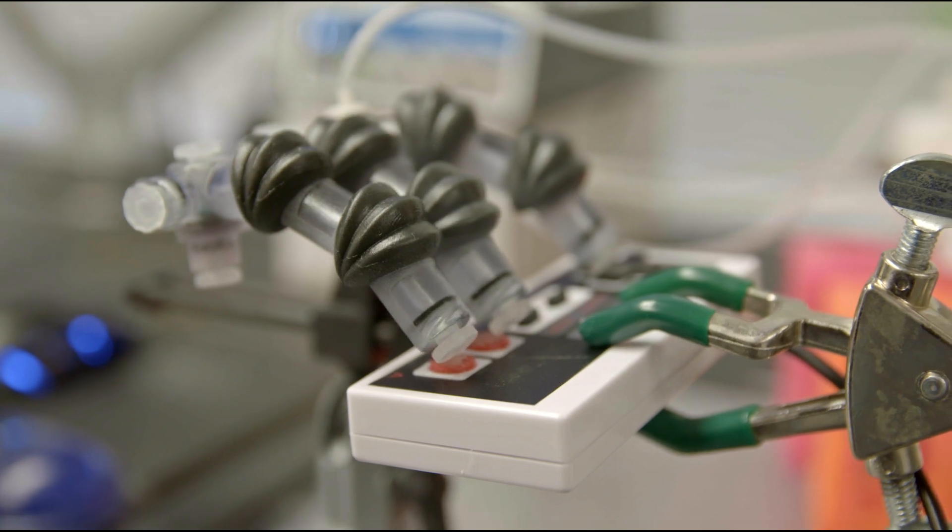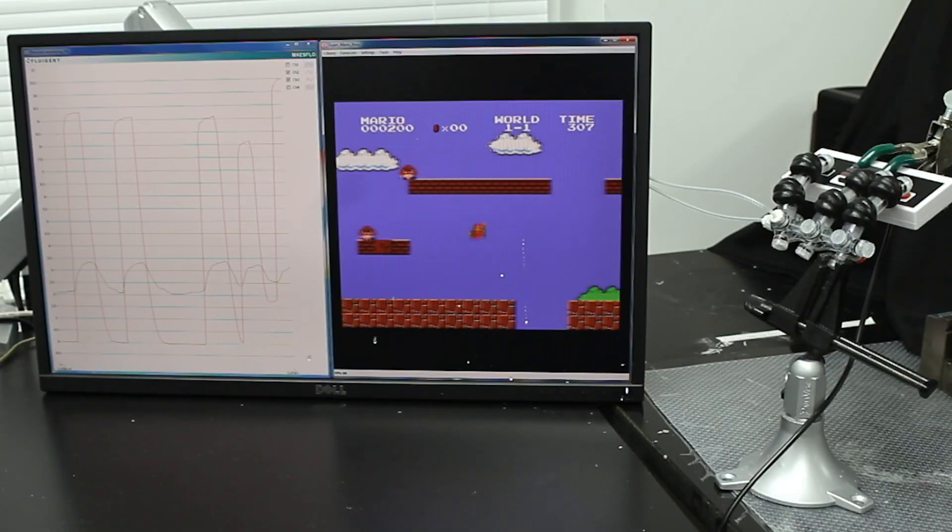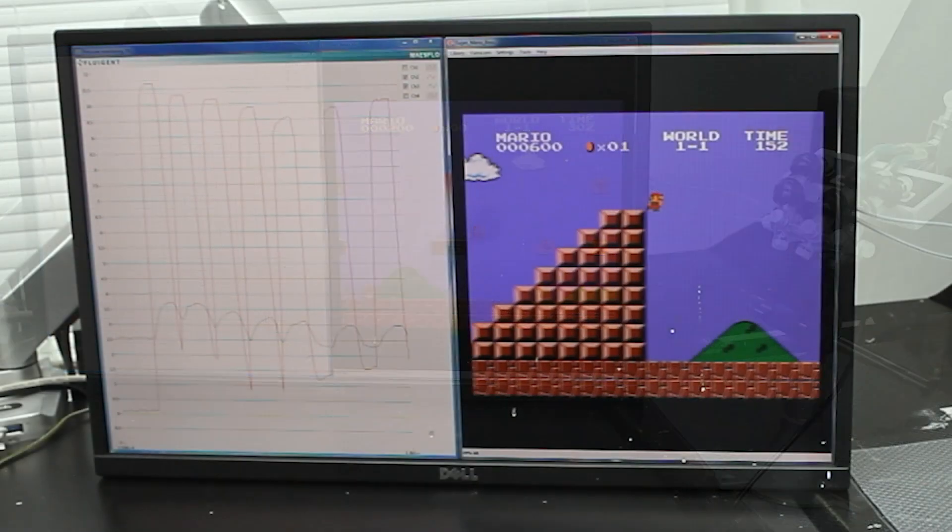Using that strategy, going from a low pressure to a medium pressure to a high pressure and then turning off the pressure, just with a single pressure line we can play the entire first level of Super Mario Brothers on the Nintendo Entertainment System.